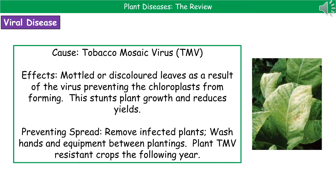If we start off with a viral disease first of all, then we're looking at tobacco mosaic virus, or TMV. A plant that's suffering with TMV will have these mottled or discoloured leaves. The reason they've got those is that the virus actually prevents the chloroplasts from forming. As you can see on the picture on the right, you do have that mottled effect and discolouration with the brown patches.